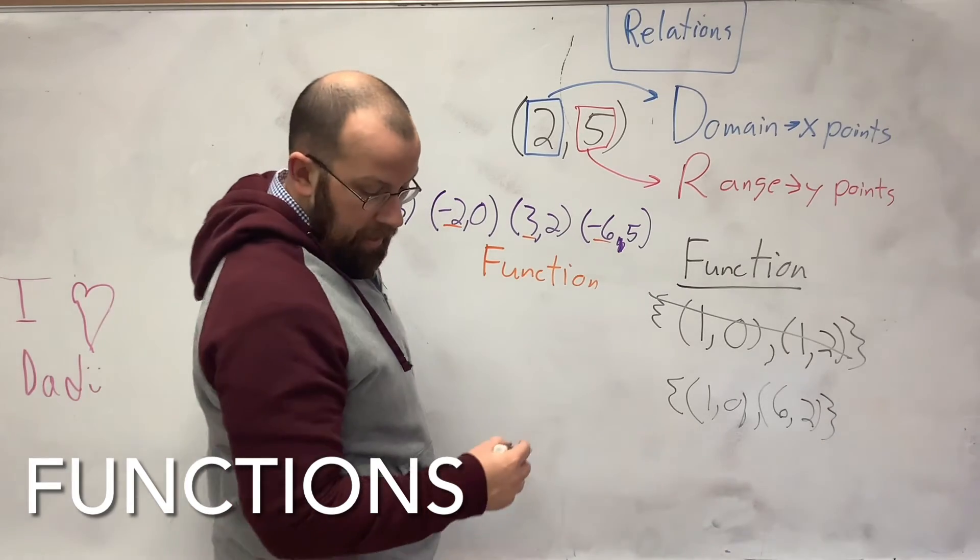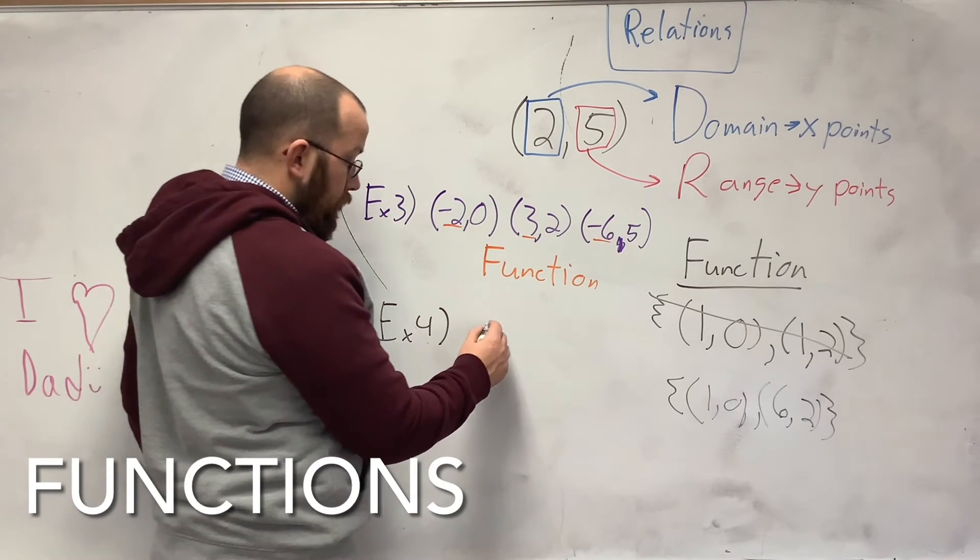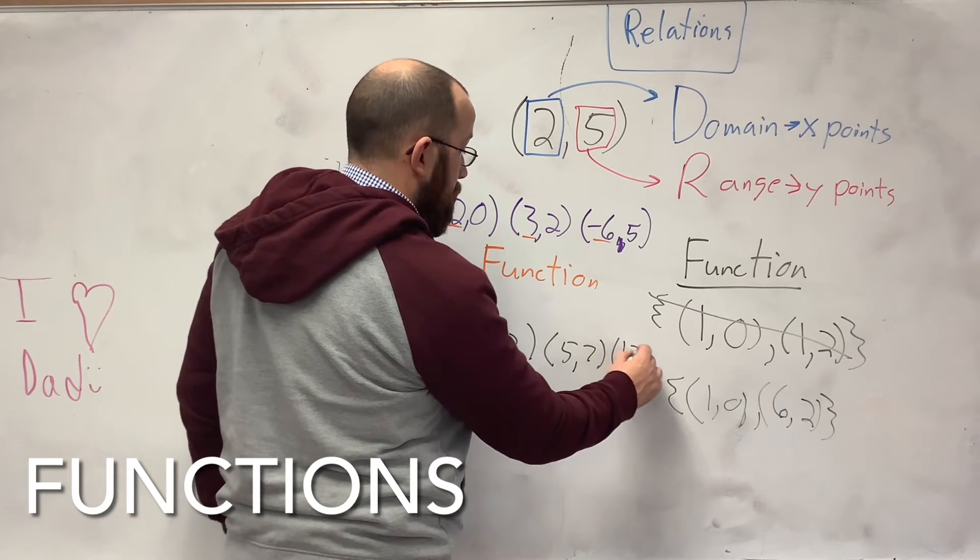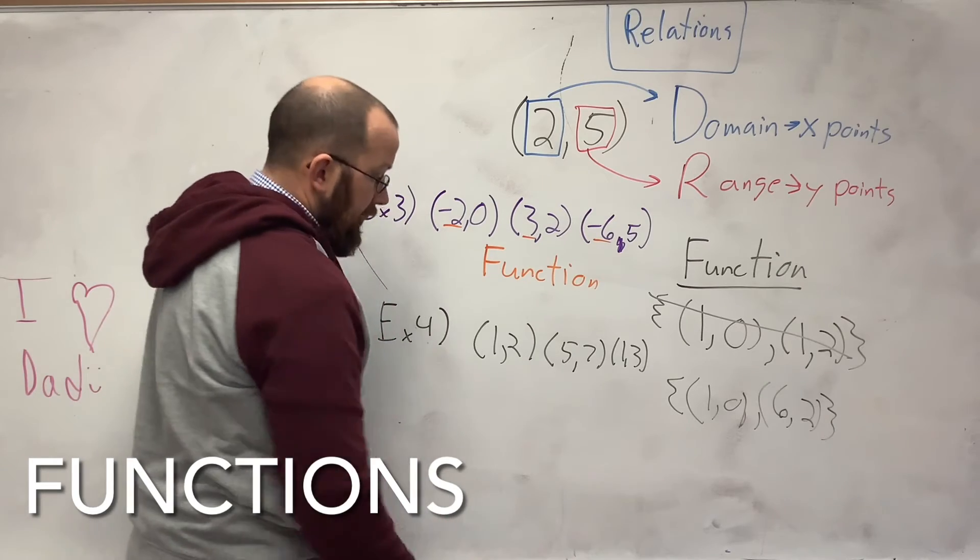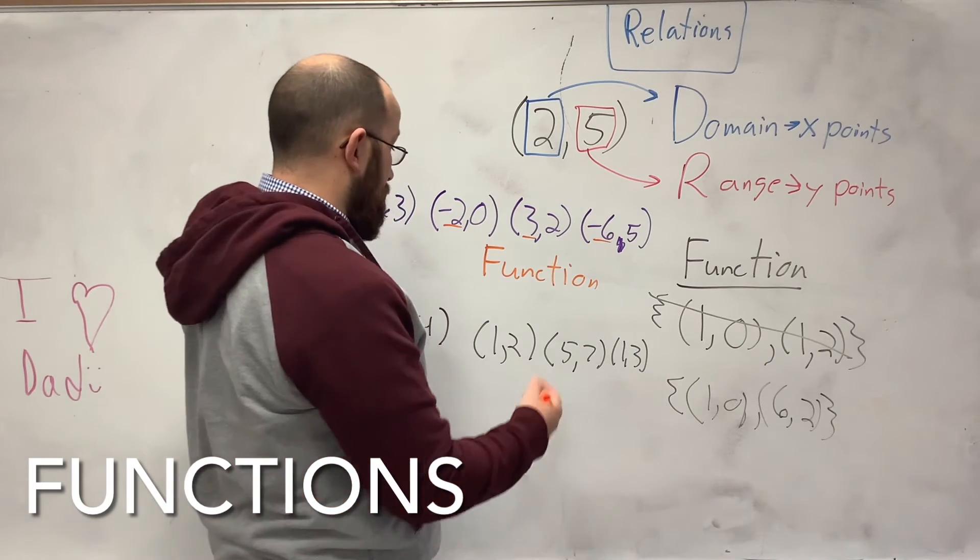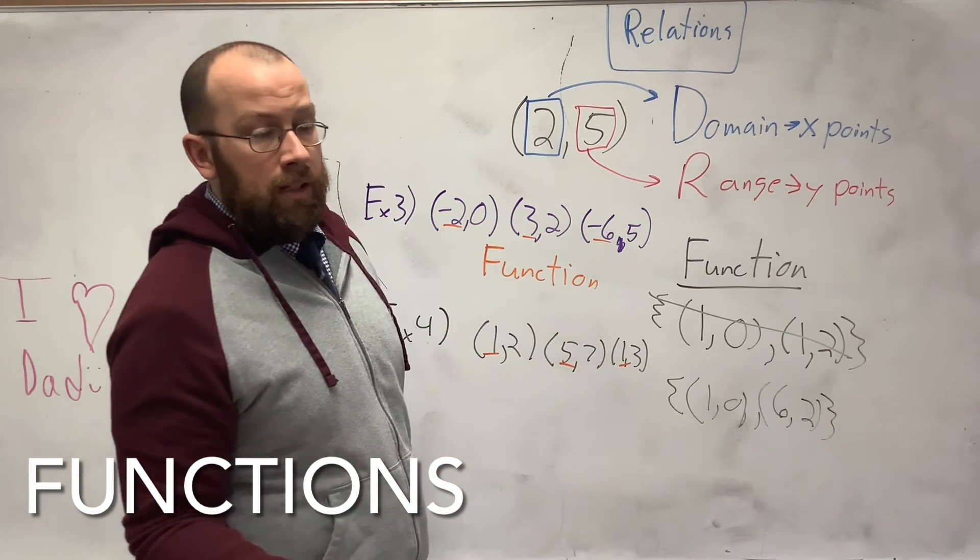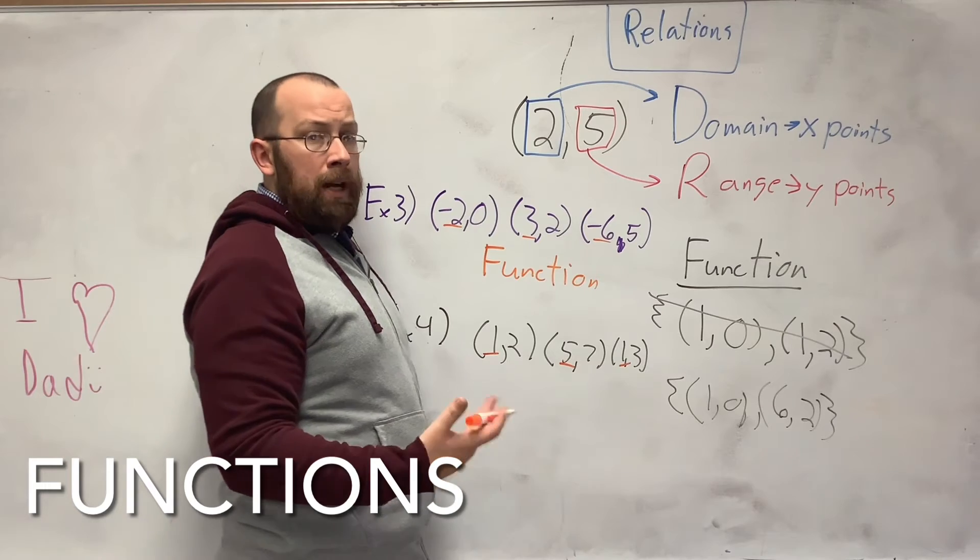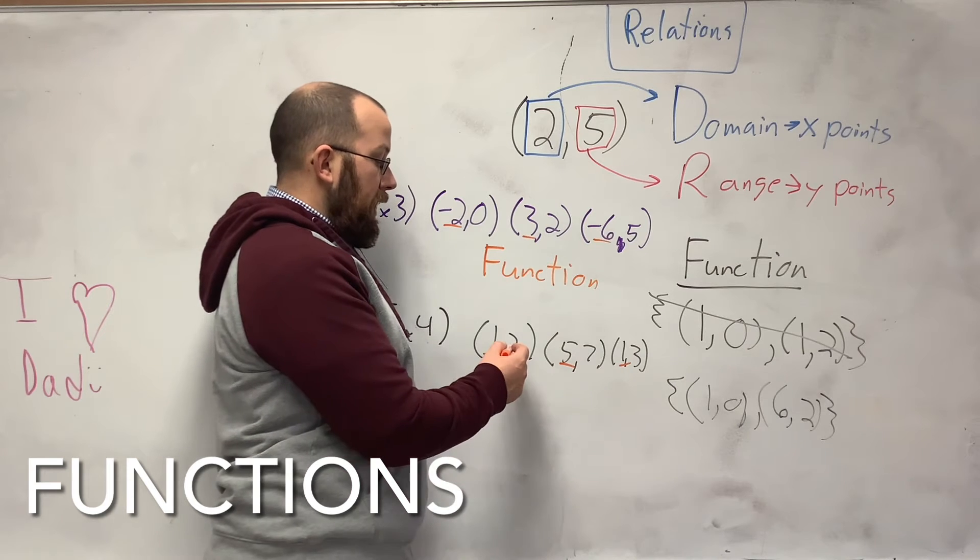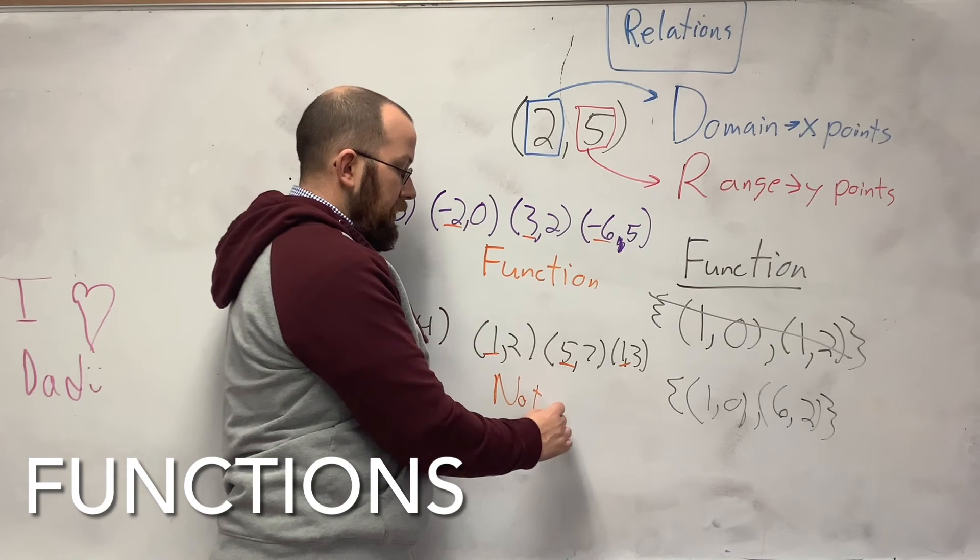So another example would be if I had {(1, 2), (5, 7), and (1, 3)}. Now, does each first pair of points have exactly one second coordinate? So I have a 1, a 5, and a 1. So I have 2 x's. Now, that's fine if they're both paired with the same number. Are both of these paired with the same number? No, they are not. 1 is a 2, 1 is a 3. So this is not a function.